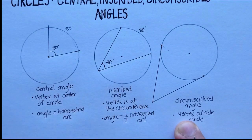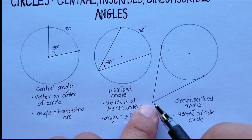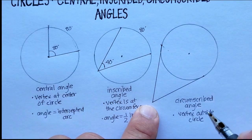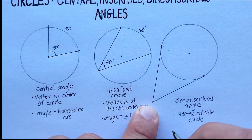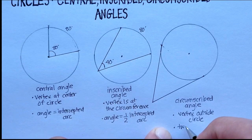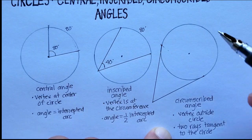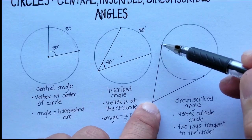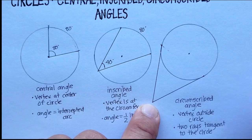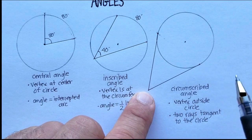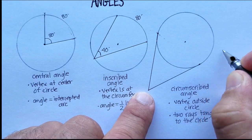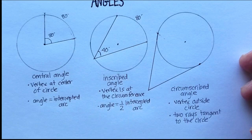For a circumscribed angle, it's a bit more complicated. A circumscribed angle has two rays that are tangent to the circle — it could also be a line segment. A tangent line intercepts the circumference at only one spot, so there is just one point that intersects the circle.